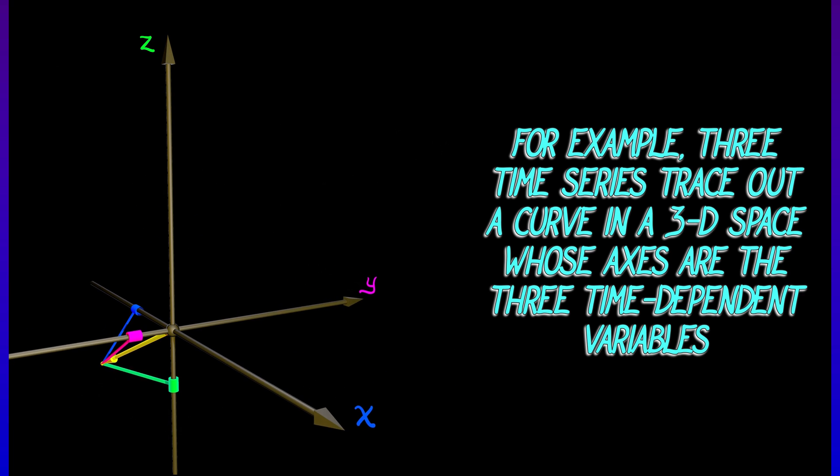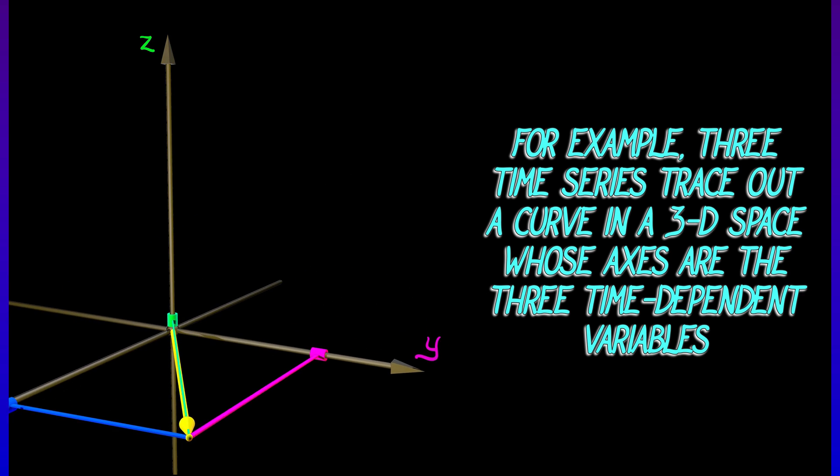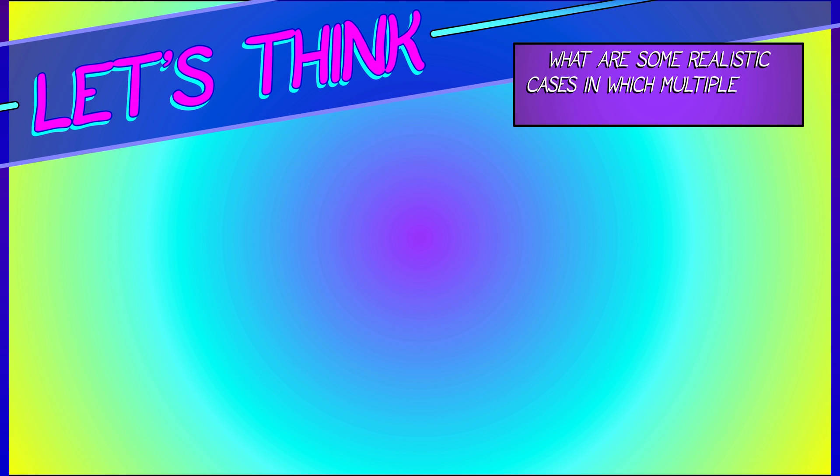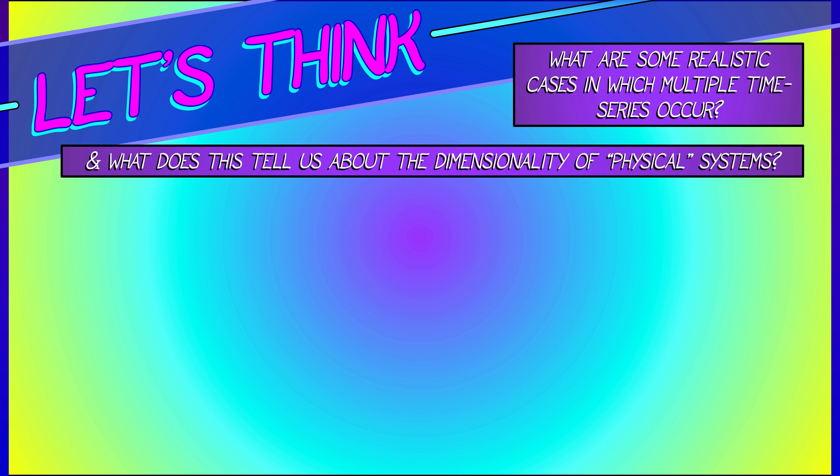What happens when we have n different time series? And let's think, are there any sort of situations in which this is really a natural thing to look at? And what does this mean about the dimensionality of physical systems?